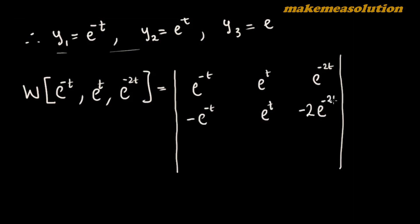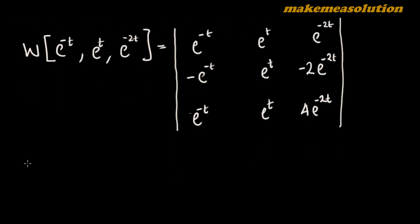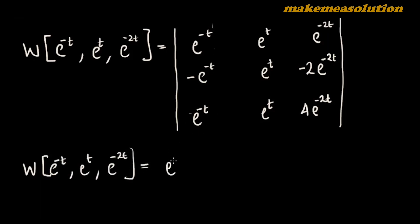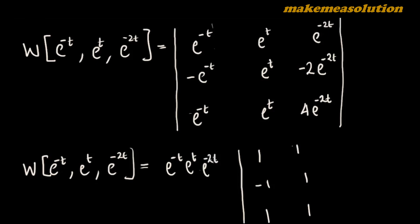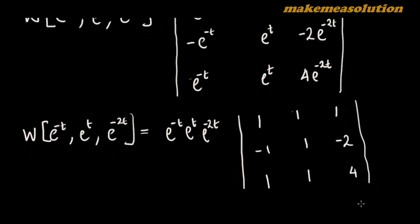Differentiating the first row gives the second row: -e^(-t), e^(t), -2e^(-2t). Differentiating again gives the third row: e^(-t), e^(t), 4e^(-2t). We then factor out common terms from each column — e^(-t) from column one giving (1, -1, 1), e^(t) from column two giving (1, 1, 1), and e^(-2t) from column three giving (1, -2, 4).